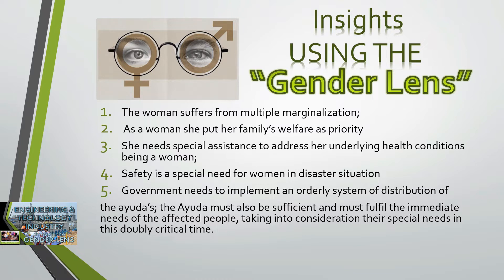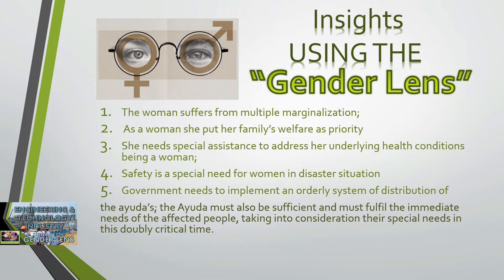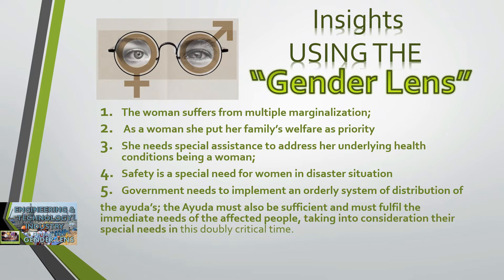As a woman, she put her family's welfare as priority. Although pregnant and not feeling well, she engaged in farming and braved the danger of stampede to secure food for her children and other family members. She needs special assistance to address her underlying health conditions. Safety is a special need for women in disaster situations. Government needs to implement an orderly system of distribution, giving priority to women, seniors, PWDs, and children. Food rations must be sufficient and fulfill the immediate needs of affected people, considering their special needs — for example, sanitary napkins for reproductive needs. Government must also respect cultural norms of the recipients — for instance, Muslims cannot eat pork.